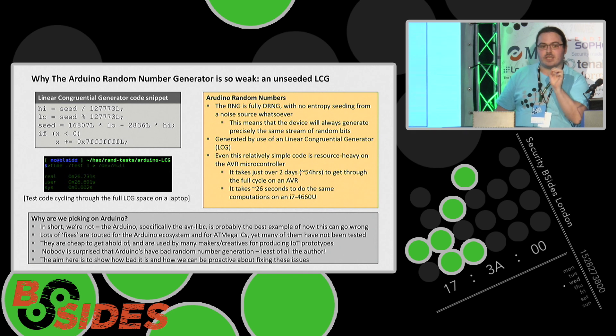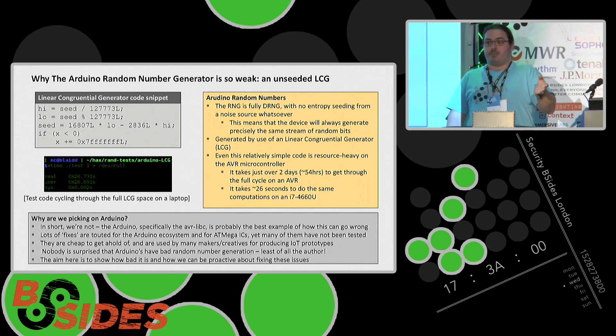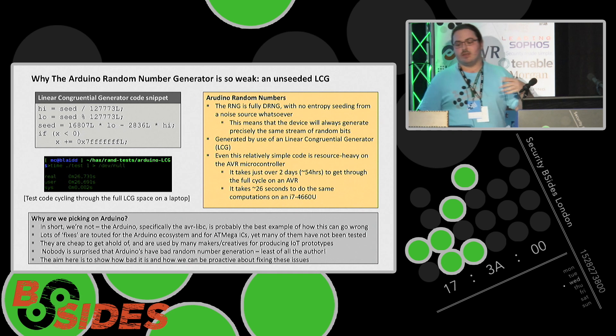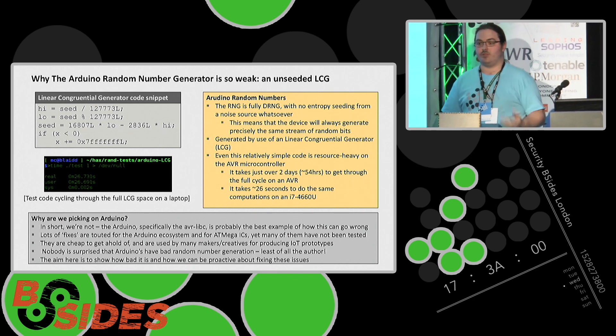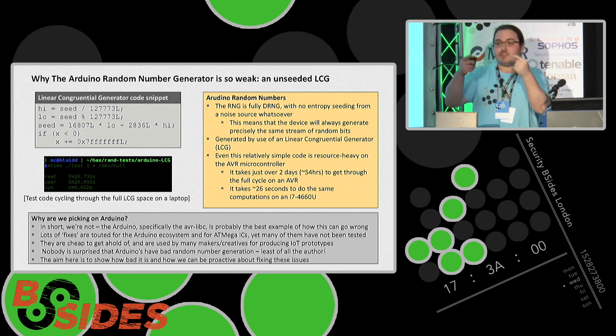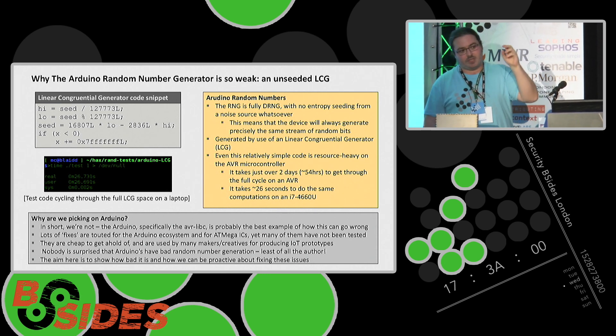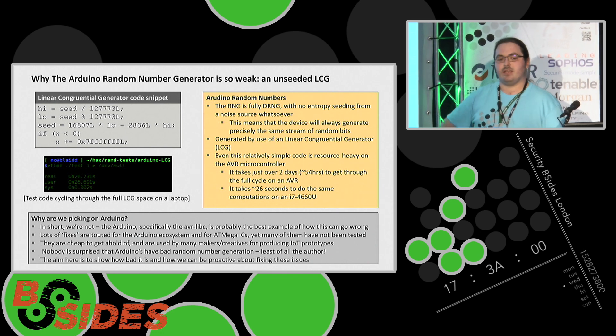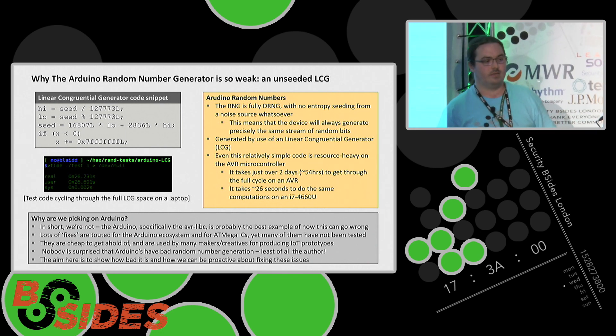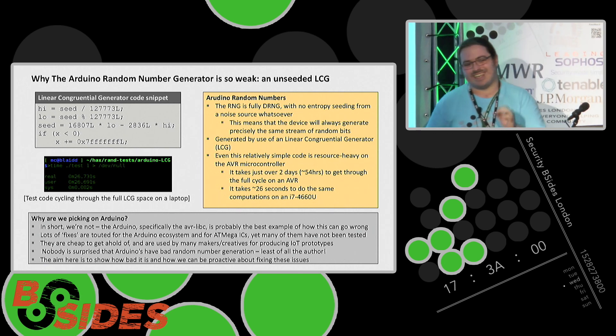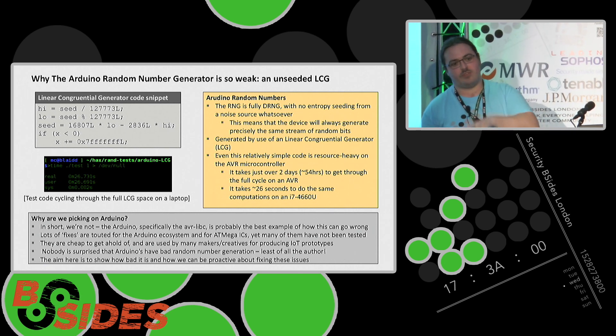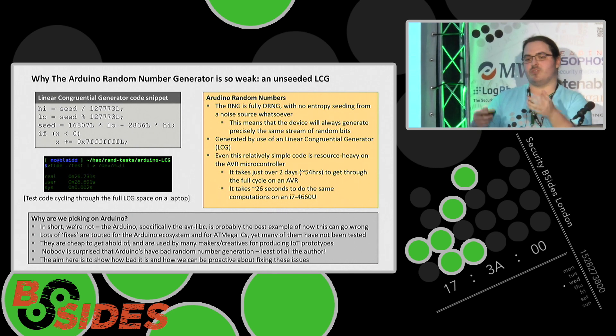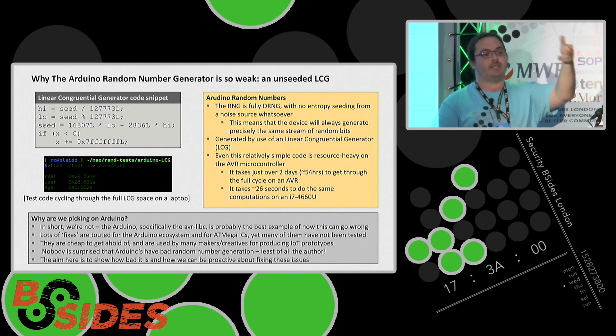The problem is it's fully deterministic, whatever the seed is chosen. The seed that's chosen by default is one. So every Arduino will generate the same random numbers in the same sequence. If you change the seed, you're not actually changing the random numbers. You're just shifting it around this whole thing. On an AVR, it takes about two days to do a full cycle. On my laptop, it takes 26 seconds. That gives you the kind of power disparity we're dealing with when implementing code on a microcontroller versus a laptop or server.